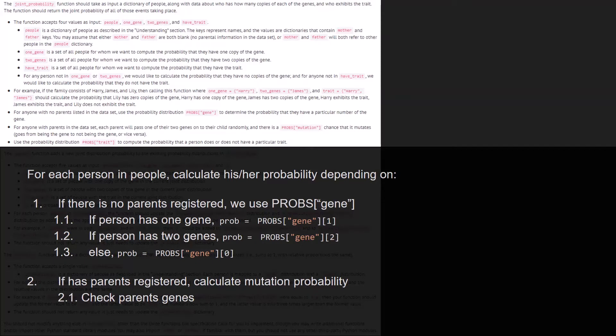So the first one, we do this for each person in people, we calculate the probability depending on if there is no parents registered, then we use the probs dictionary and that depending on the gene, the number of genes expected for that person. So if that person has one gene, we use probs gene 1 and if it's two genes, we use probs gene 2 and for the non-genes, we use the zero.